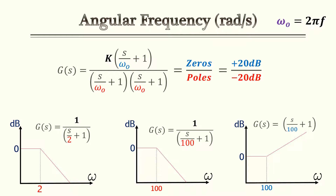A key element in understanding your transfer function is angular frequency, measured in radians per second. In the equation, the numerator in blue represents zeros and the denominator in red represents poles — everything in blue and red is your angular frequency. Anytime it's on the numerator, you add 20 decibels per decade on your Bode plot. When it's a pole, it's negative 20 decibels per decade, so the more poles you have, the steeper the slope gets, and vice versa for zeros.